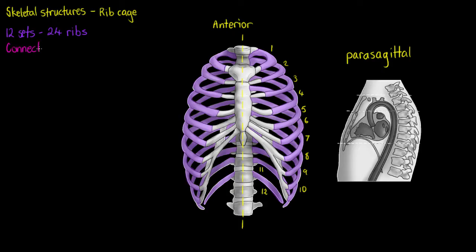These sets of ribs are going to connect posteriorly to our thoracic vertebrae. Our thoracic vertebrae are the segments of our spine that have special facets on them to articulate with our ribs.